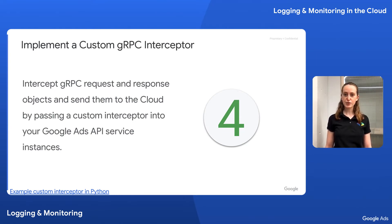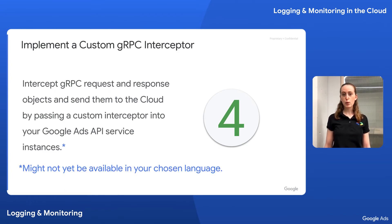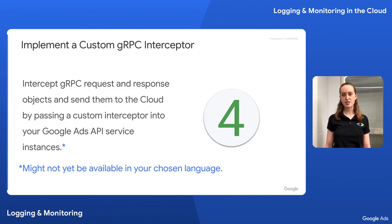To make this easier for you, we've implemented an example custom interceptor in Python with comments explaining implementation requirements. While this is possible in Python, it might not be available in every Google Ads client library. If your client library doesn't expose a custom interceptor argument for service instantiators, we encourage you to create an issue in that client library's GitHub repository to request it.